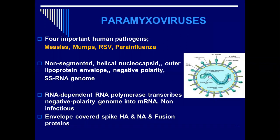The RNA-dependent RNA polymerase-carrying negative-strand RNA viruses are not really infectious unless they are converted to positive-polarity RNA. Now the envelope of these viruses is made up of hemagglutinin, neuraminidase, and fusion proteins. This means we have three types of proteins in this group of viruses.